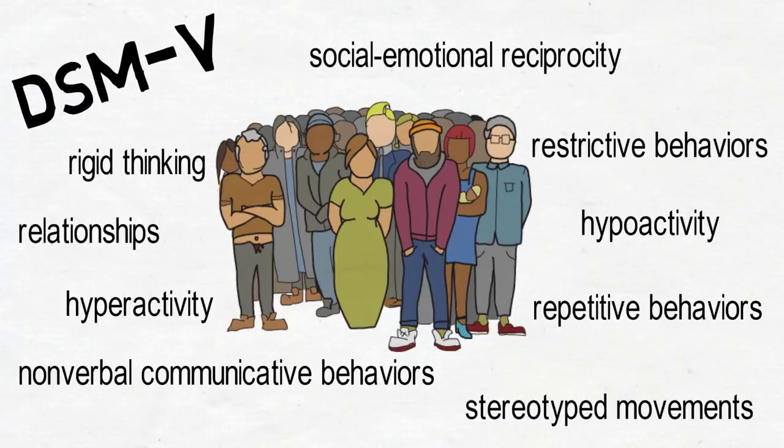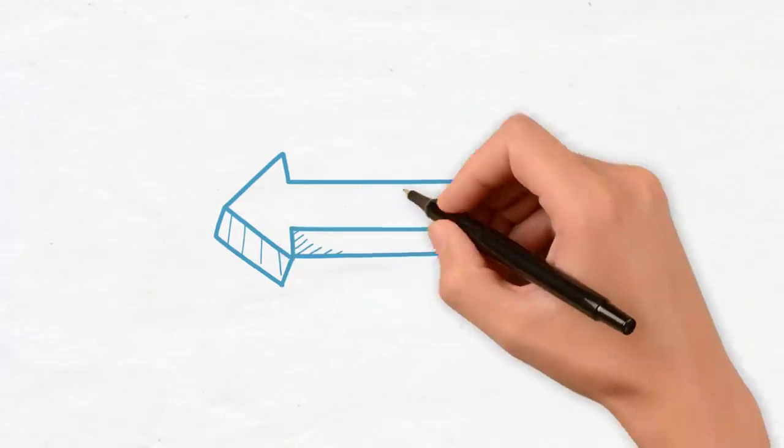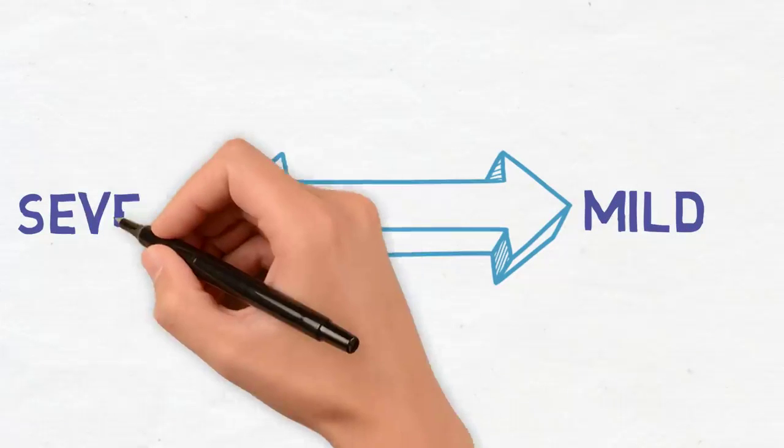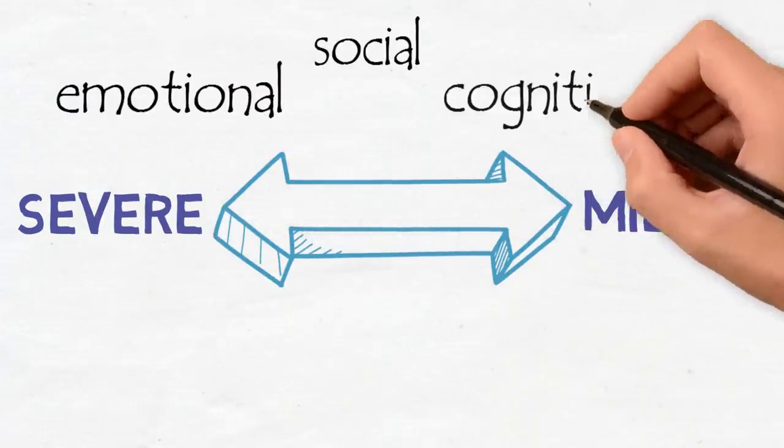So for our next section, we're going to go into contextual information. Children with ASD are described as being on the spectrum, but what does that mean? In layman's terms, the spectrum varies from very high to very low levels of emotional, social, and cognitive functioning.